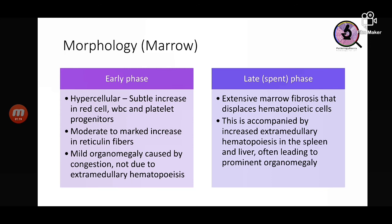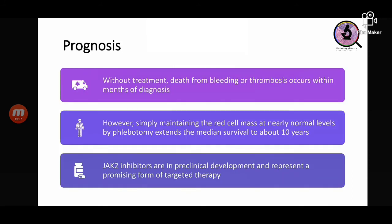In late phase, there is extensive marrow fibrosis displacing all hematopoietic cells. When the marrow is depleted, extramedullary hematopoiesis starts in the spleen and liver, leading to prominent splenomegaly and hepatomegaly. Prognosis: without treatment, patients die from bleeding or thrombosis. Simple treatment by phlebotomy — removal of blood to maintain red cell mass — extends median survival up to 10 years. JAK2 inhibitors are in development and may represent promising targeted therapy.